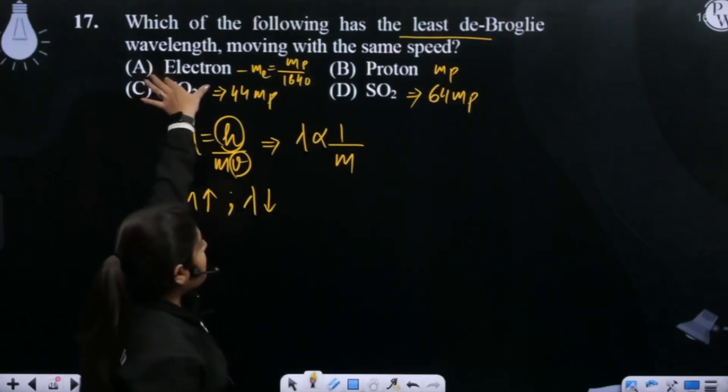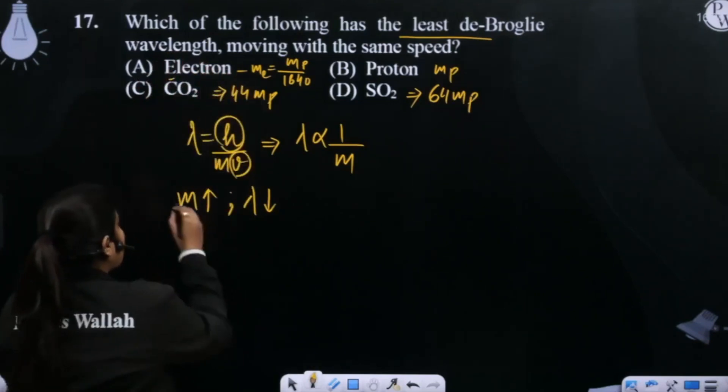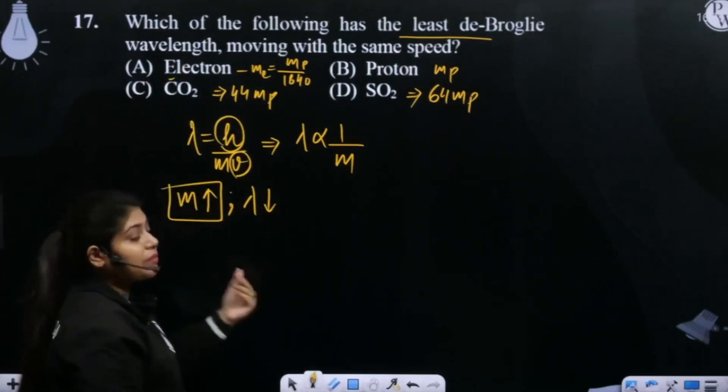So this is the most low mass. This is the de Broglie wavelength, which will be maximum. What do we have to see? The mass of the mass is the most, what will the de Broglie wavelength be minimum?